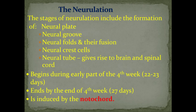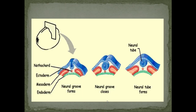The stages of neurulation include the formation of the neural plate, neural groove, neural folds, and their fusion. Neural crest cells are also formed. The neural tube finally gives rise to brain and spinal cord. Neurulation begins during the early part of the fourth week and ends by the end of the fourth week. Neurulation is induced by the notochord.